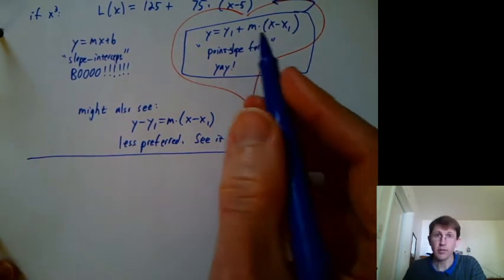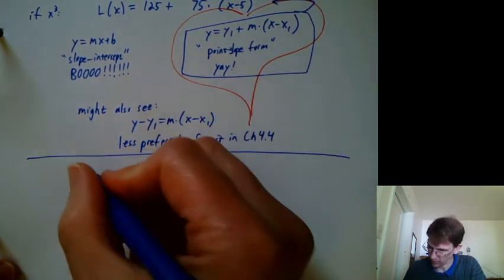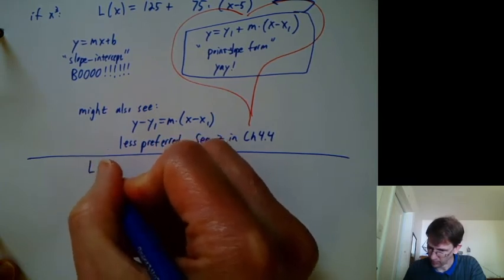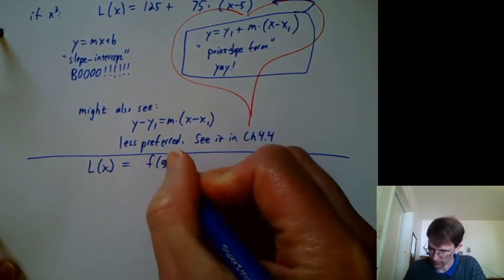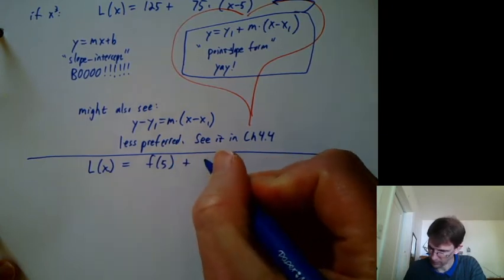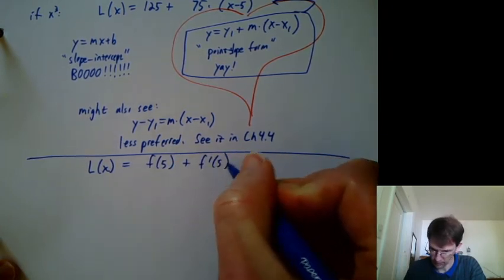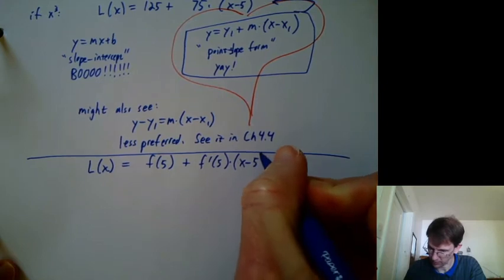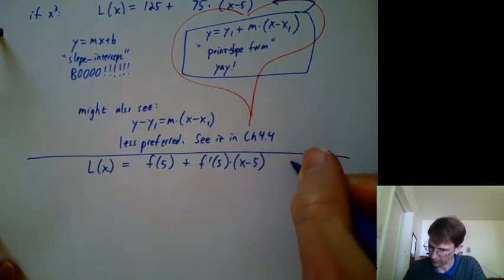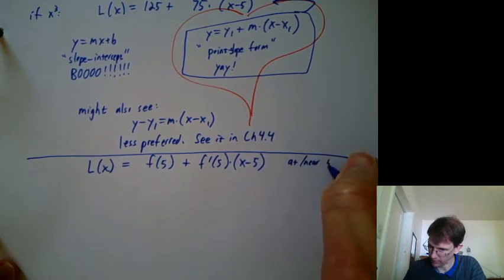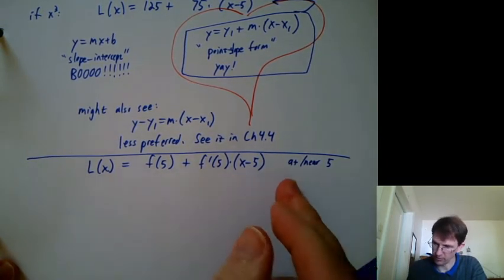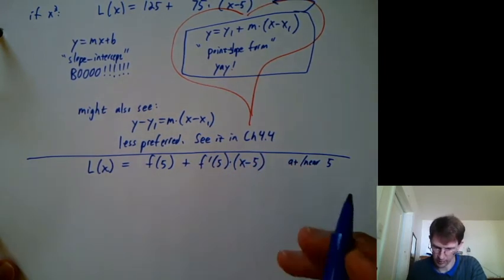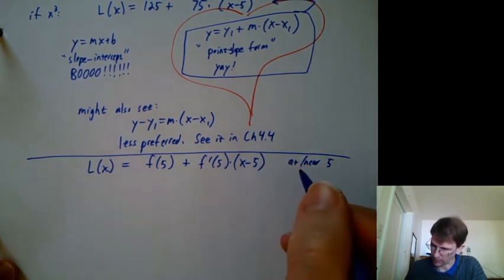So maybe you're tired of using 5. That's okay. I am too. Let's write out what we've been using. So we had f of 5 plus f prime at 5 times x minus 5. And so that was at or near 5. I mean, that's still the formula for L of x, even when x is not near 5, but it's a better approximation the closer you are to 5.